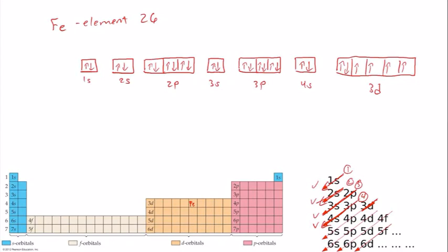Now you should be able to start filling up electron orbitals and drawing electron orbital diagrams. Remember you're filling up by adding one electron from the previous element. You can use the diagonal arrow configuration chart to help, or remember how to fill up the periodic table row by row — both approaches will give you the correct answer.